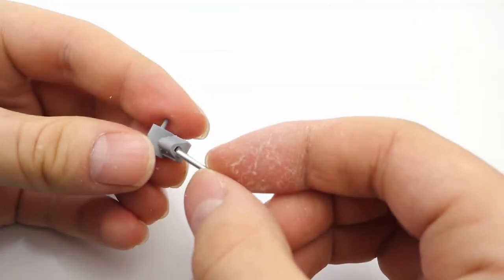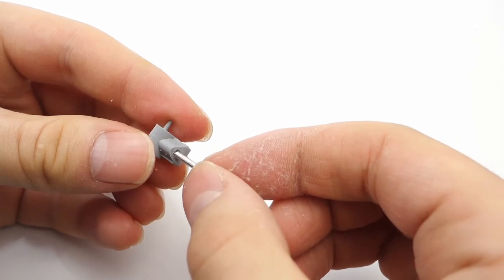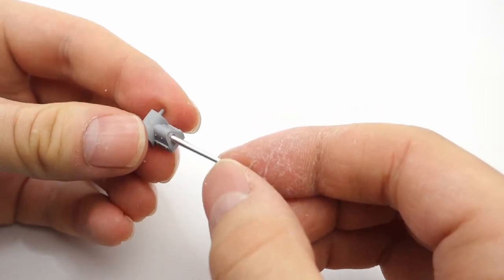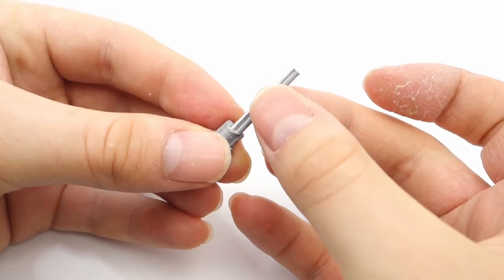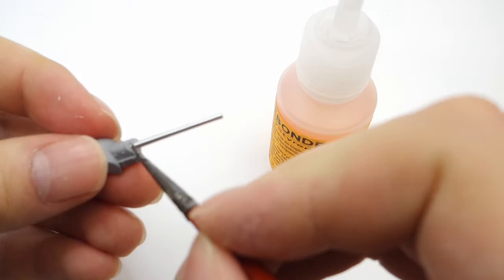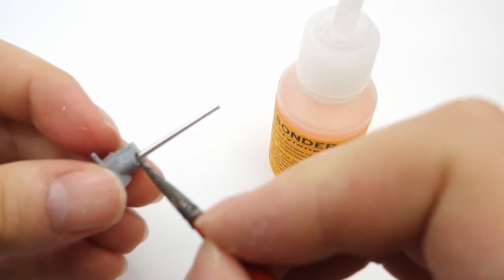Now I can attach the aftermarket gun barrel using super glue. I can also check if the gun barrel is correct length using the older plastic one. All the excess super glue can be easily removed using the debonder.